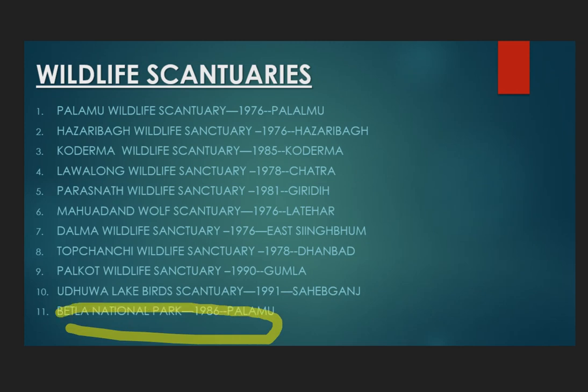There are 11 wildlife sanctuaries and a biological park. I missed that point and will cover it at the end. There is also a crocodile breeding center in Ranchi and the Basa Deer Park in Khunti. Now we will talk about the first wildlife sanctuary.